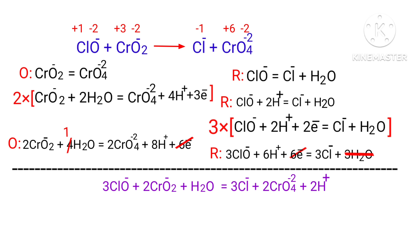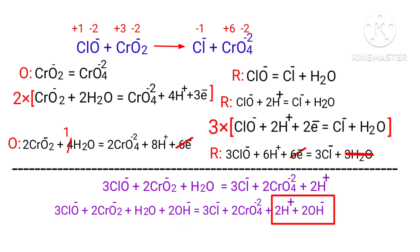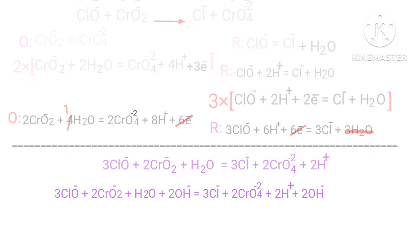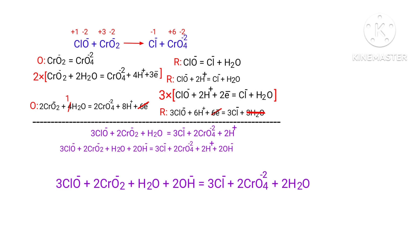For a reaction in a basic medium, add one OH⁻ ion for every H⁺ ion present in the equation. The OH⁻ must be added to both sides to keep charge and atoms balanced. Then combine OH⁻ and H⁺ ions on the same side to form water molecules.